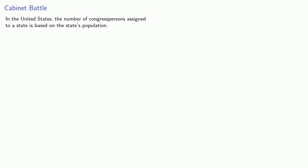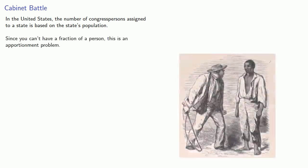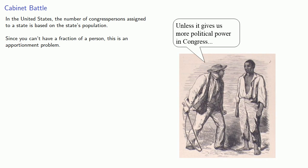In the United States, the number of congresspersons assigned to a state is based on the state's population. Since you can't have a fraction of a person, this is an apportionment problem.